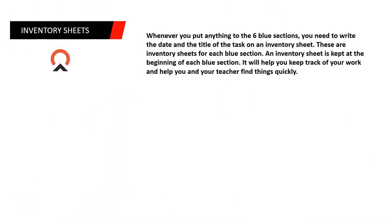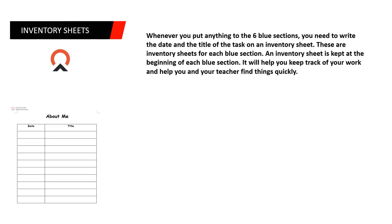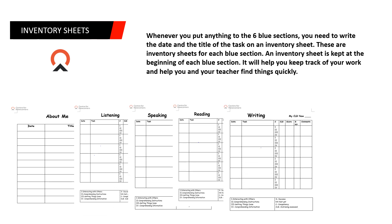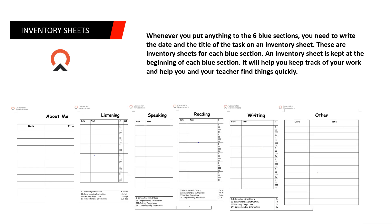Whenever you put anything into the six blue sections, you need to write the date and the title of the task on an inventory sheet. These are inventory sheets for each blue section. An inventory sheet is kept at the beginning of each blue section. It will help you keep track of your work and help you and your teacher find things quickly. Every student's inventory will be different because everyone starts at a different time. At the end of each session, your teacher will look at your binder and have a meeting with you to talk about how your language learning is going.